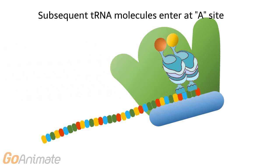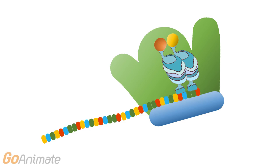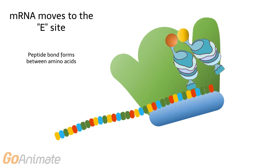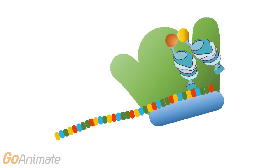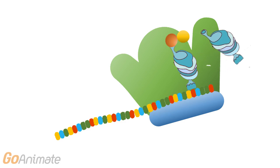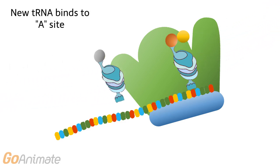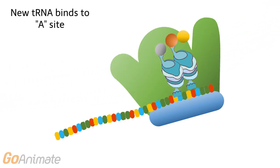Subsequent tRNA molecules enter at the A site. Once another tRNA enters, the mRNA shifts position to the E site. A peptide bond now forms between the amino acids. New tRNA molecules continue to enter at the A site, bringing more amino acids and forming a polypeptide strand.